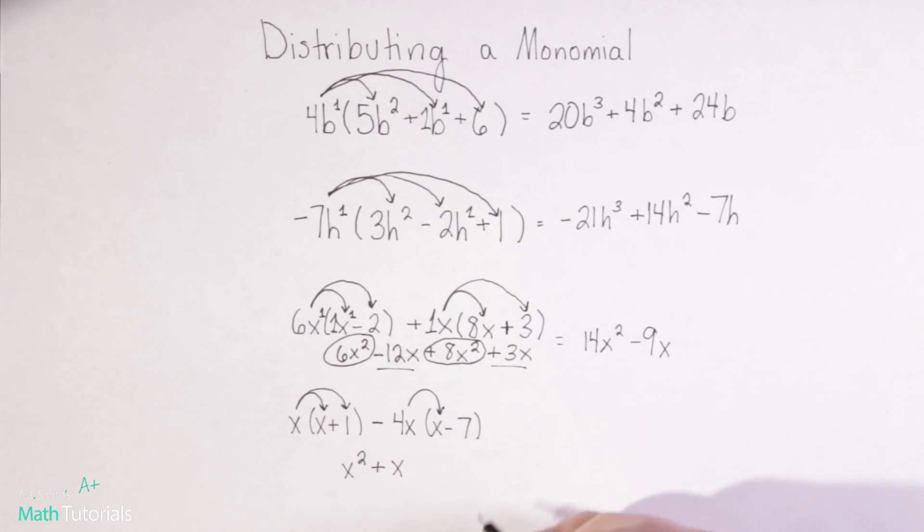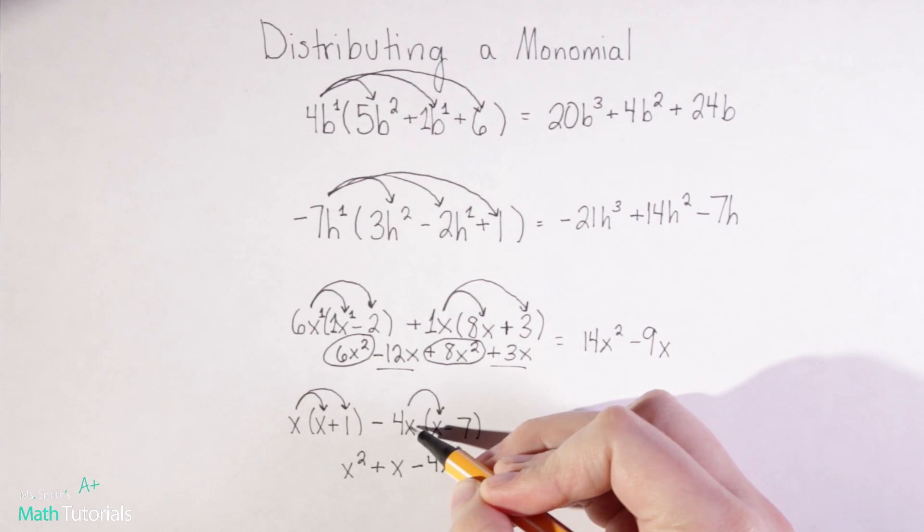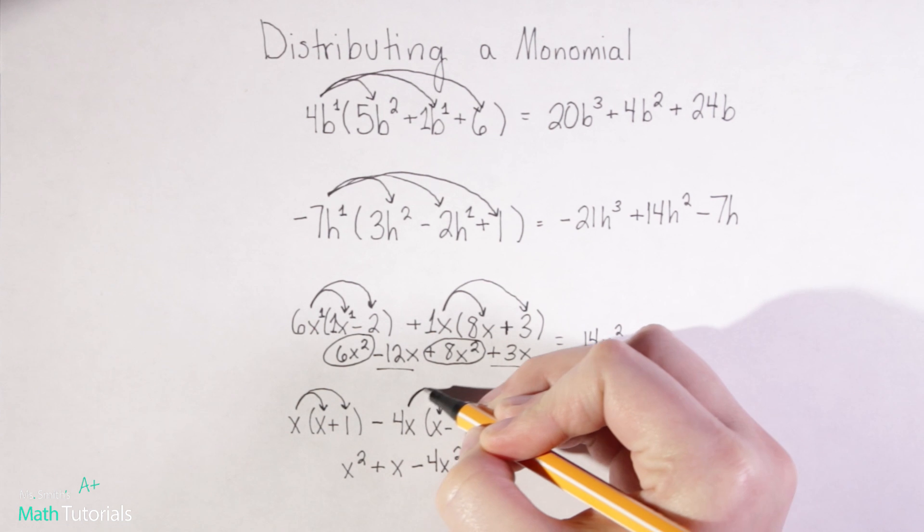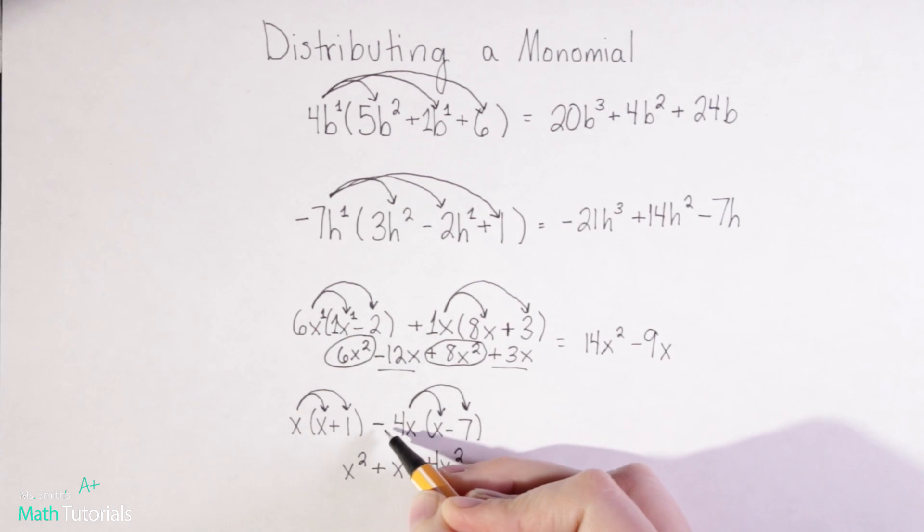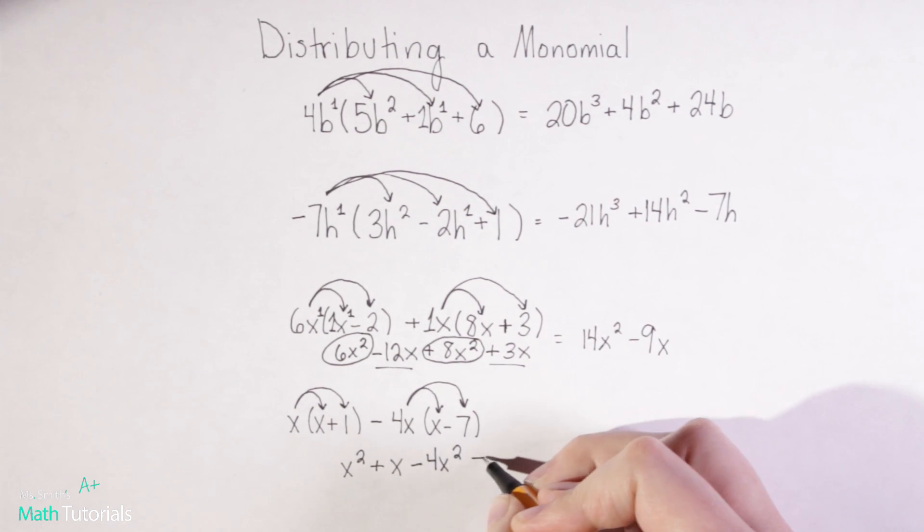Now we'll distribute this negative 4x into this set of parentheses. So negative 4x times x would be negative 4x squared. Negative 4x times negative 7, remember a negative times a negative is a positive 28x.